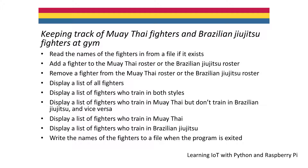Suppose you've been asked by a mixed martial arts trainer to write a program that helps them keep track of the fighters at the gym. Some fighters train in Muay Thai, some train in Brazilian Jiu-Jitsu, and some train in both styles. He wants to save the list of fighters to a file, be able to add a fighter to the Muay Thai roster or to the Brazilian Jiu-Jitsu roster, and remove a fighter from either roster.